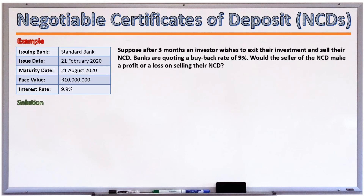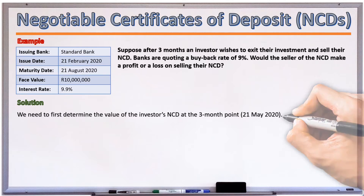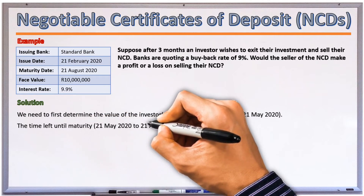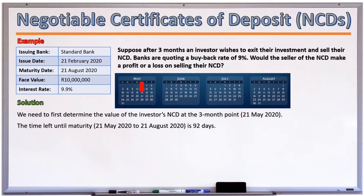Suppose that after three months, an investor wishes to exit their investment and sell their NCD. Banks are quoting a buyback rate of 9%. Would the seller make a profit or a loss on selling their NCD prior to its maturity date? We need to determine the value of the NCD at the three-month point — halfway between the issue date and the maturity date. The time remaining from 21 May 2020 to 21 August 2020 is 92 days.